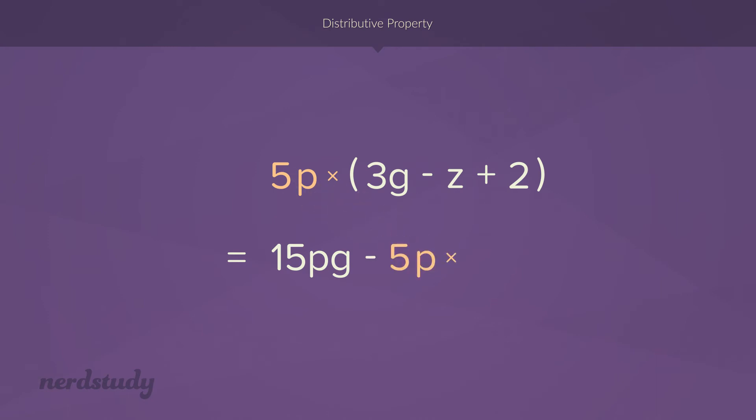minus 5p multiplied by z, which would be 5pz, plus 5p multiplied by 2, which would be 10p. So this is really easy stuff. If you just take it one step at a time, and you make sure that you are allowed to use it, it's a correct situation to use it, then everything else after that becomes fairly simple. It's just a matter of multiplication, really.